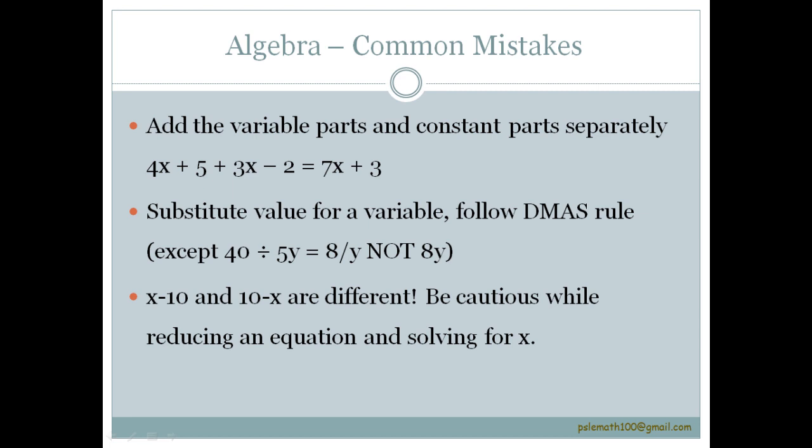Similarly, when substituting value for a variable, follow the DMAS rule except when cases like 40 divided by 5y. Here the 5y is together. So the answer should be equal to 8 by y and not 8y. Don't do 40 divided by 5 first which is 8 and then times y.